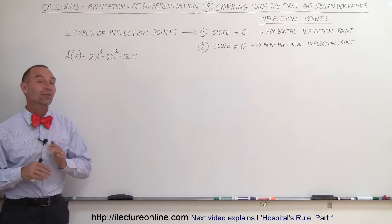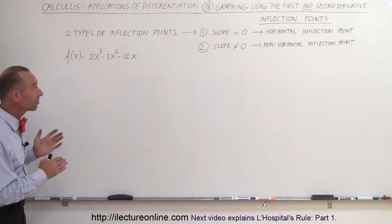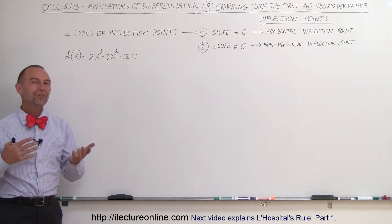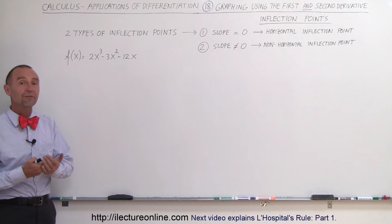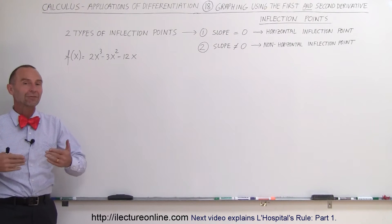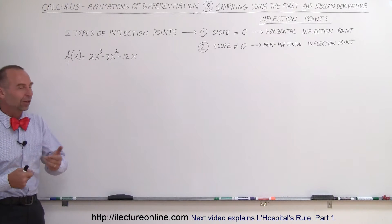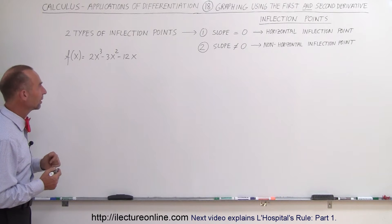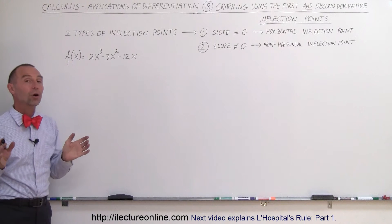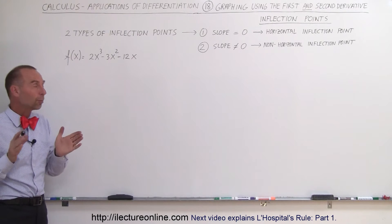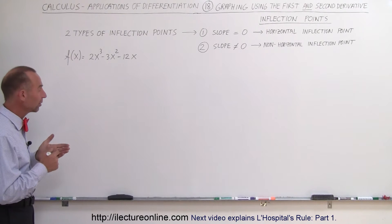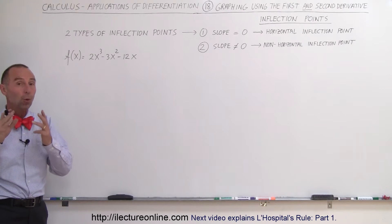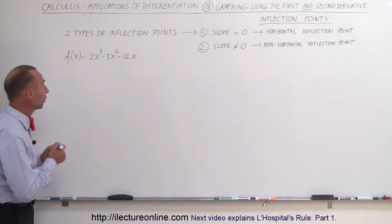Welcome to iLectraOnline. Here's another classic example to show you the different kinds of inflection points and what kind of information we can get out of taking the first and second derivative. So here we have our function. Let's first find all the critical points where the slope is equal to zero, which may either be a maximum, a minimum, or an inflection point.